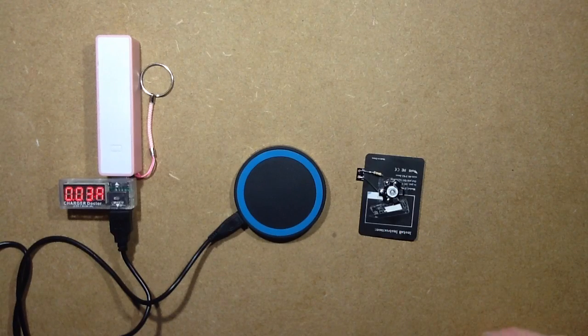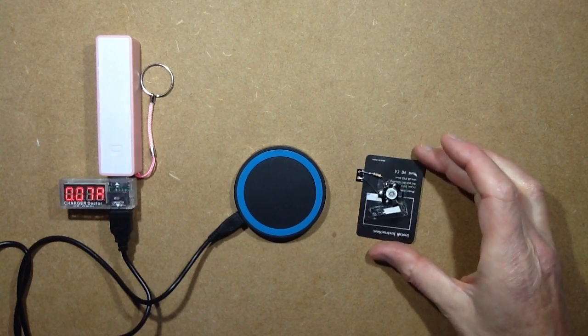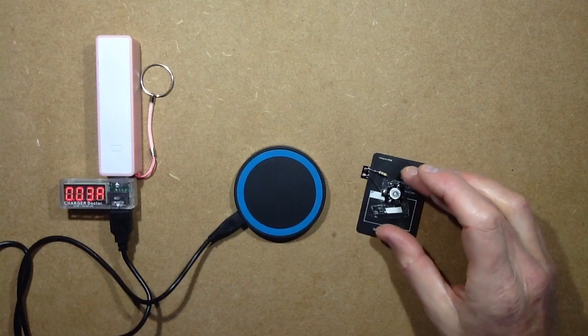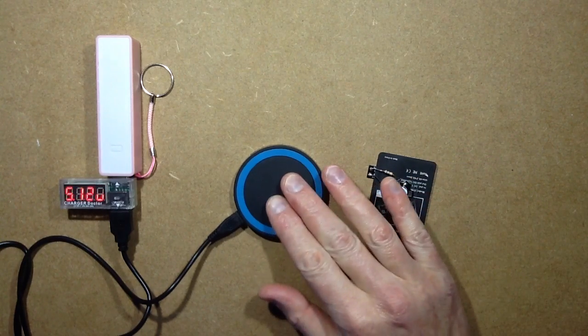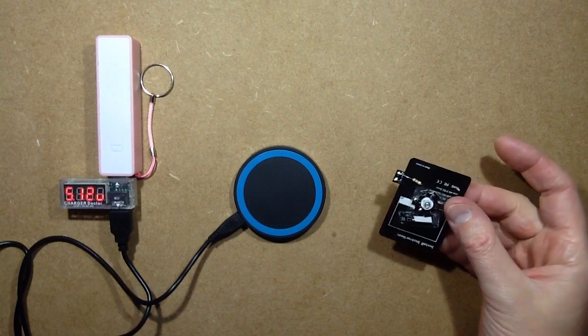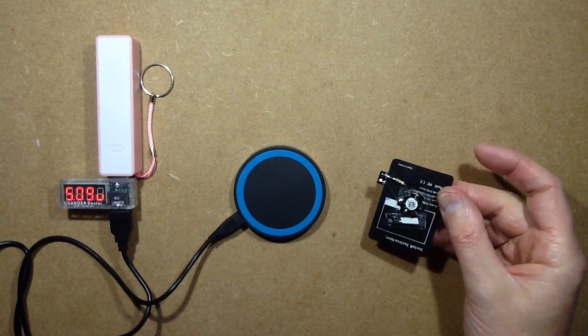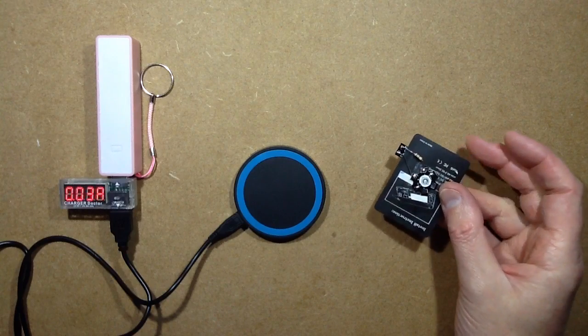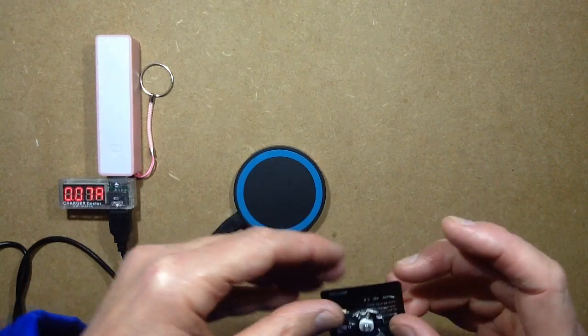I got myself some random QI charger stuff off eBay to play with, and I got one of these little mats and one of these little adapter charging plates that you put inside your existing phone that adapts it to contactless charging.